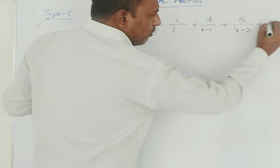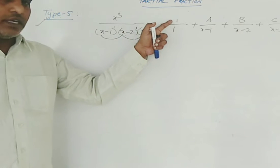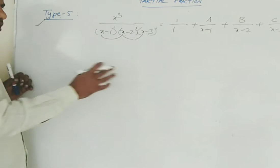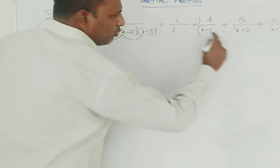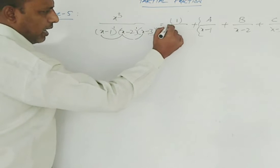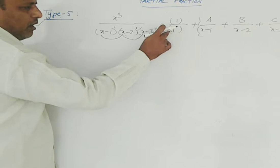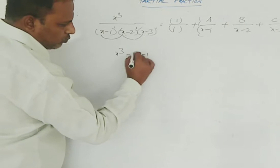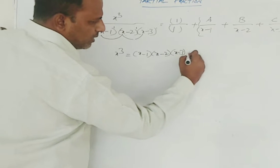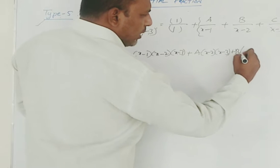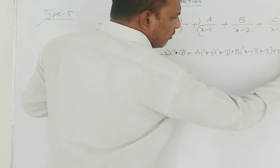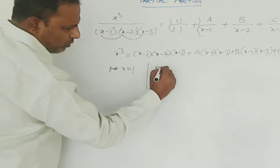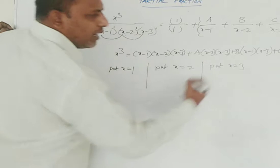So we write a by x minus 1 plus b by x minus 2 plus c by x minus 3. The highest degree coefficient of f of x divided by the highest degree coefficient of g of x, plus the partial fraction terms. So x cubed equals x minus 1 times x minus 2 times x minus 3, plus a times x minus 2 times x minus 3, plus b times x minus 1 times x minus 3, plus c times x minus 1 times x minus 2. Same process: put x equal to 1, put x equal to 2, put x equal to 3 to find a, b, and c.